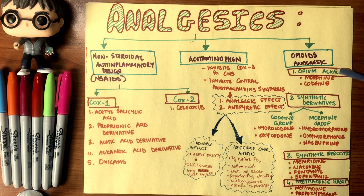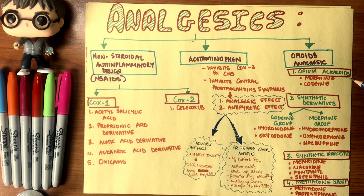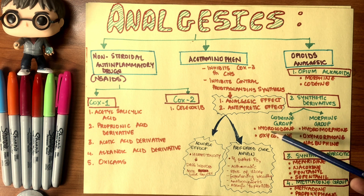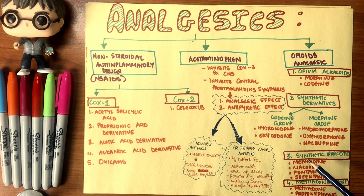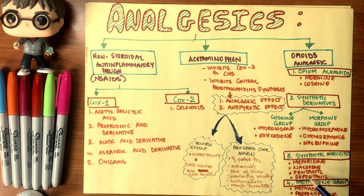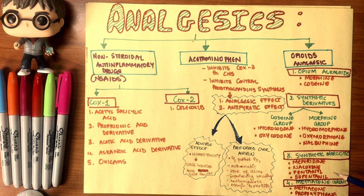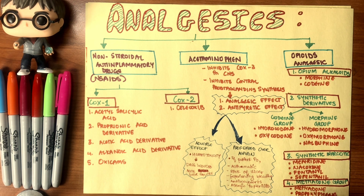Opioid analgesics are divided into four categories. Opium alkaloids (naturals) include morphine and codeine. Semi-synthetic derivatives include hydrocodone and oxycodone in the codeine group, and hydromorphone, oxymorphone, and nalbuphine in the morphine group. Synthetic narcotics include meperidine, naloxone, fentanyl, and sufentanil — primarily used before general anesthesia for sedation or pain control. Finally, methadone and propoxyphene are also powerful and can replace morphine or codeine.